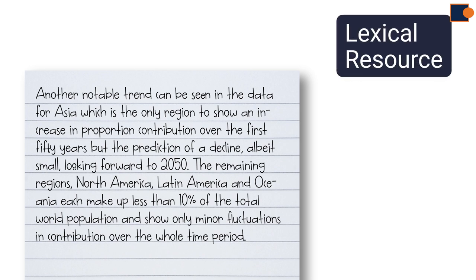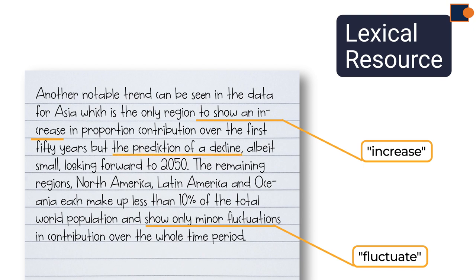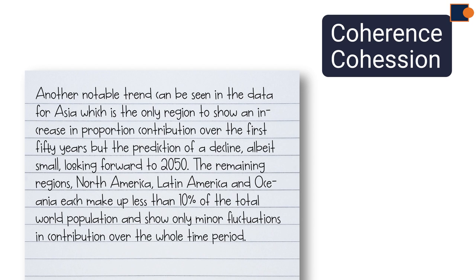Next criteria to consider is lexical resource. In this example, you can't see any repetition of verbs used in the points. There are different types of phrases used to describe data, such as show an increase means increase. Show only fluctuations means fluctuate. Prediction of decline looking forward means will decline. In the coherence section, it also uses wide range of connecting phrases, like another notable trend, part, albeit means although, the remaining regions. They are also making ideas connect flawlessly without making any difficulty for readers.